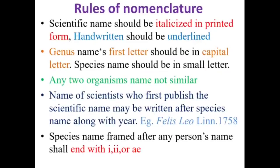Next topic is rules of nomenclature. The first rule: in printed form, the scientific name should be in italics. In handwritten form, it should be underlined separately. The genus name's first letter should be in a capital letter; the species name should be in small letters.